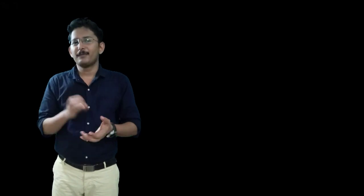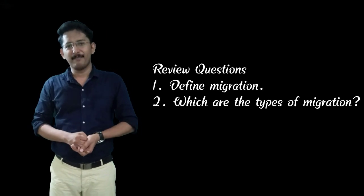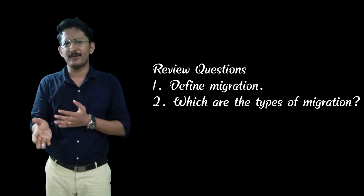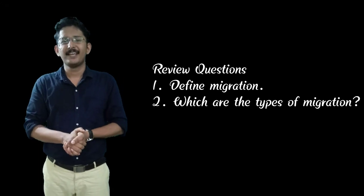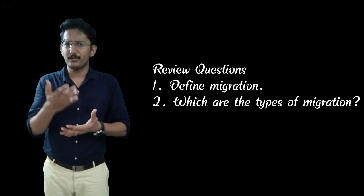You have a homework: write down two questions with their answers in your copy. The first question is: define migration — you can get the definition from your textbook. The second question is: what are the types of migration? You need to write the headings — by the title itself you will be able to explain what it is. Hope to see you soon with another session. Be safe at home, thank you, bye.